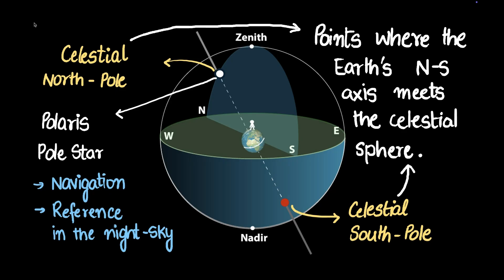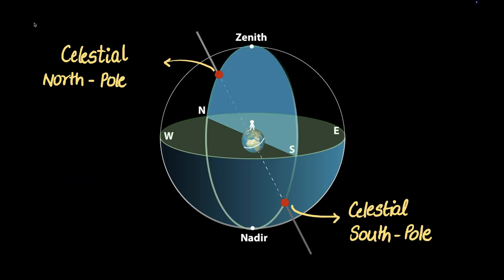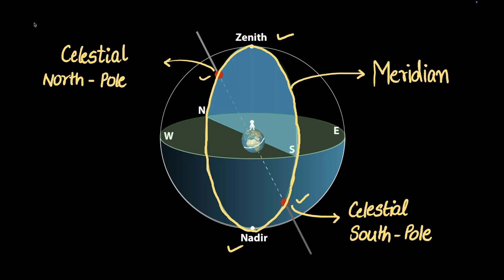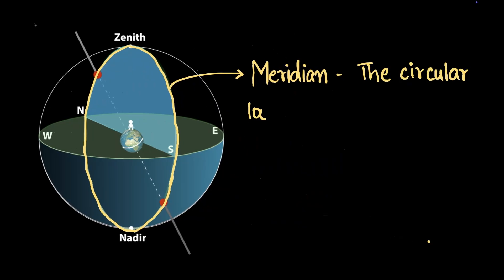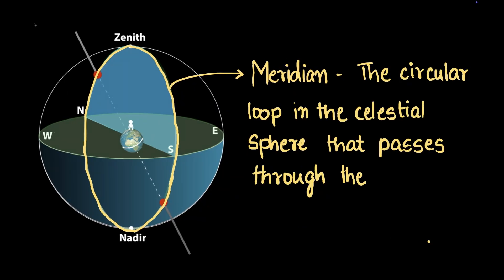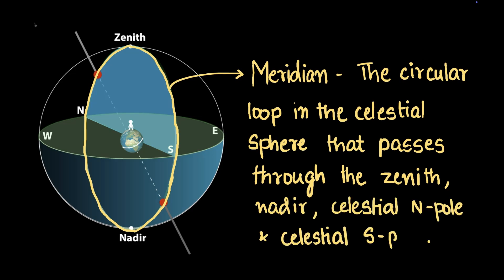So we've defined the celestial north pole and celestial south pole. Now let's define another thing: the meridian. There's a circular loop that runs through all four points — the zenith, the nadir, the celestial north pole, and the celestial south pole — and that is called the meridian. It is the circular loop in the celestial sphere that passes through these four points.